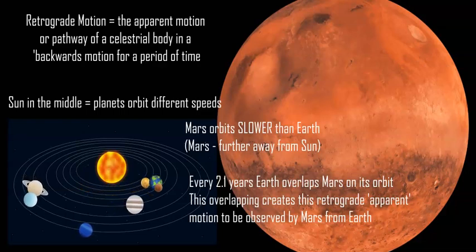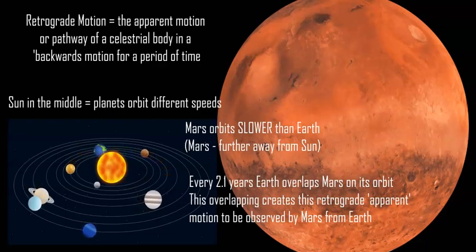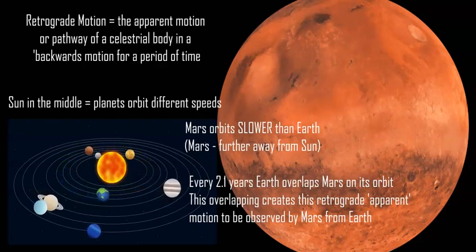Planets appeared to move backwards at certain times from Earth's perspective. This is an apparent motion - a motion we see on Earth that isn't really happening, but occurs because of our position and perspective.